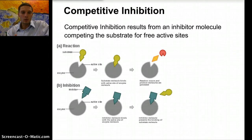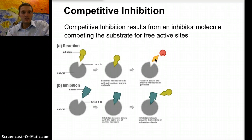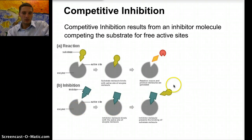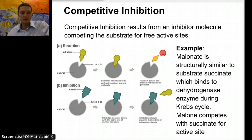Enzymes can be blocked by inhibitors from carrying out the reactions they catalyze. One way is competitive inhibition, which results from inhibitor molecules competing with the substrate at the active sites. In our normal reaction we've got our enzyme and our substrate binding to produce a product. With competitive inhibition, we've got our inhibitor competing for that active site.